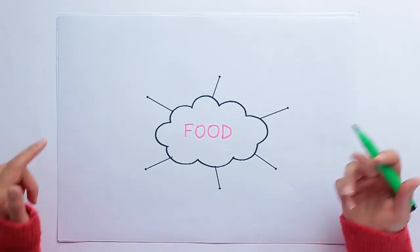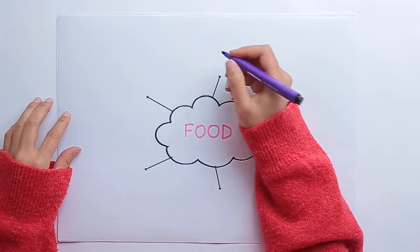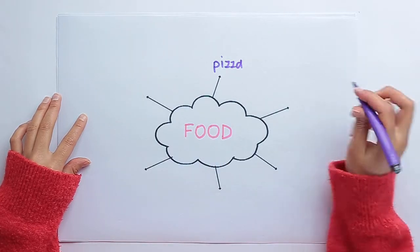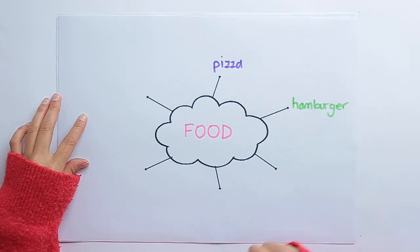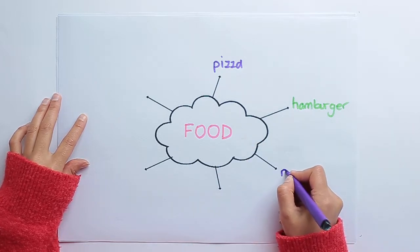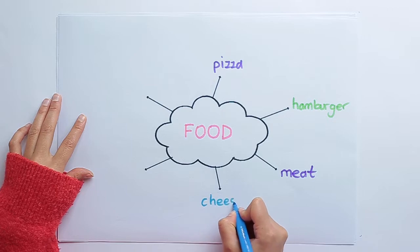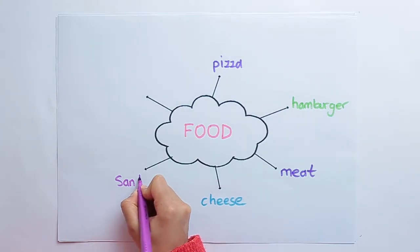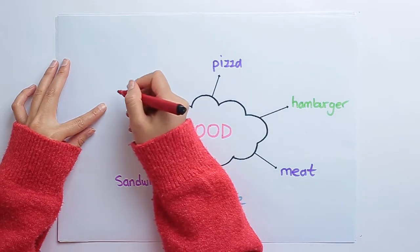Now let's think and write some food. What do you know? For example, pizza — pizza is a food. Hamburger — hamburger is a food. Also meat. Cheese — cheese is a food. Sandwich — sandwich is a food. And let's write bread.